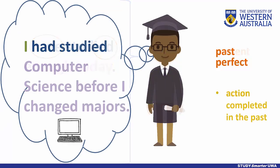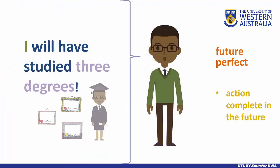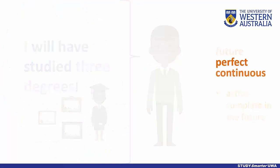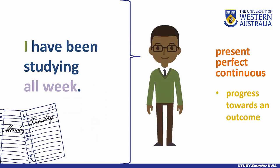Again, the auxiliary verb is the one that changes tense, and indicates whether an action is completed in the present, the past, or the future.